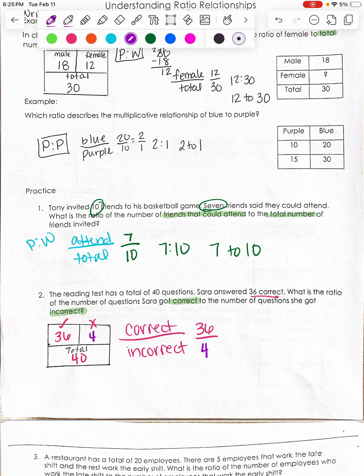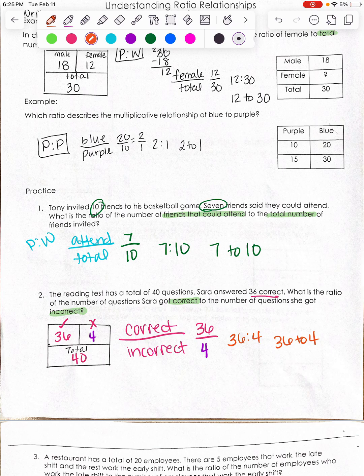So that would be 4. So my ratio is 36 to 4. If you wanted to simplify that, you could.